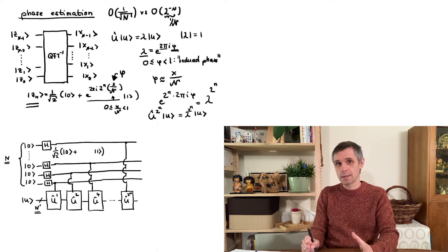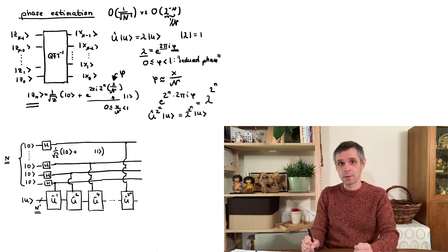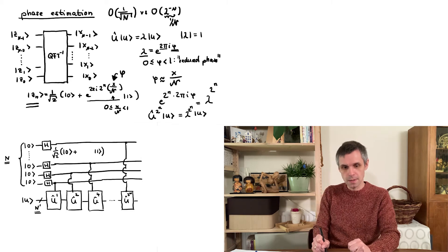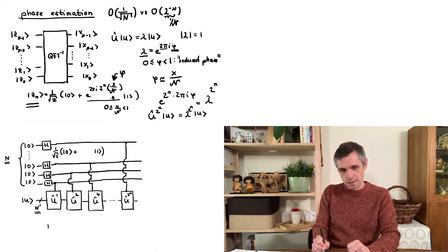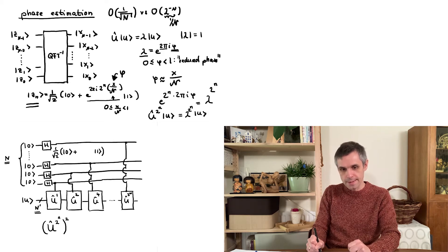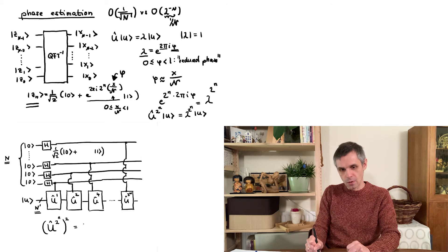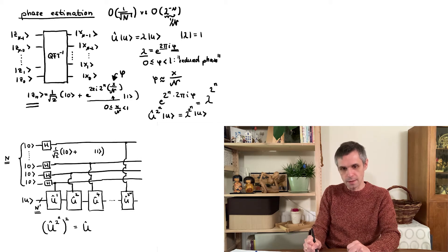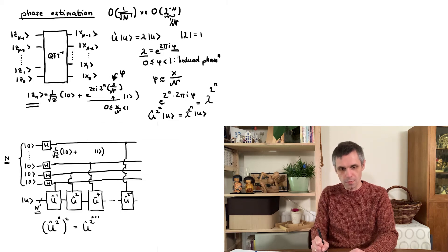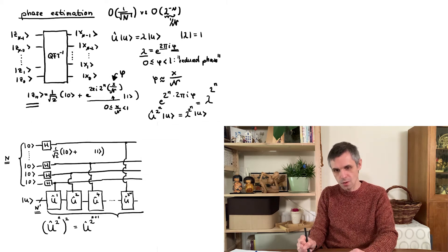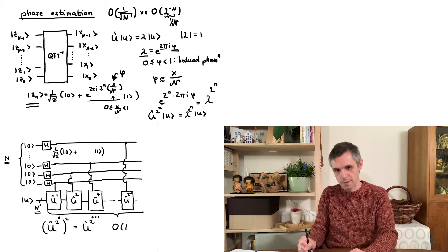And now it looks a little bit like we have to apply this unitary operator an exponentially large number of times. But there we can actually implement the same strategy that one exploits in the classical fast-Fourier transform, namely we use the fact that when we apply this operator here twice, then we already obtain this operator here. So altogether, what we have then done here are really just of the order of n squared operations.